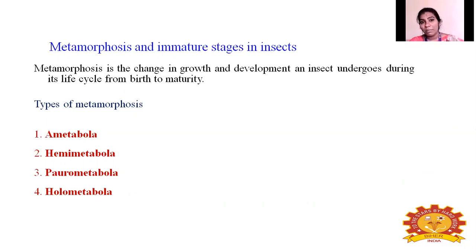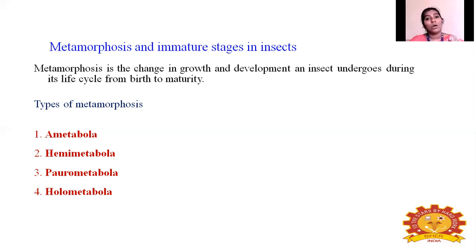From birth to maturity means some insects may stop their growth phase before adult or between the adult stage. So overall, metamorphosis is the change in growth and development of an insect during their life stages, that is during their life cycle from birth to maturity. The growth and development in insects is not the same for all insects; it may vary according to their living habit and habitat. There are four important types of metamorphosis: Ametabola, Hemimetabola, Parometabola, and Holometabola.